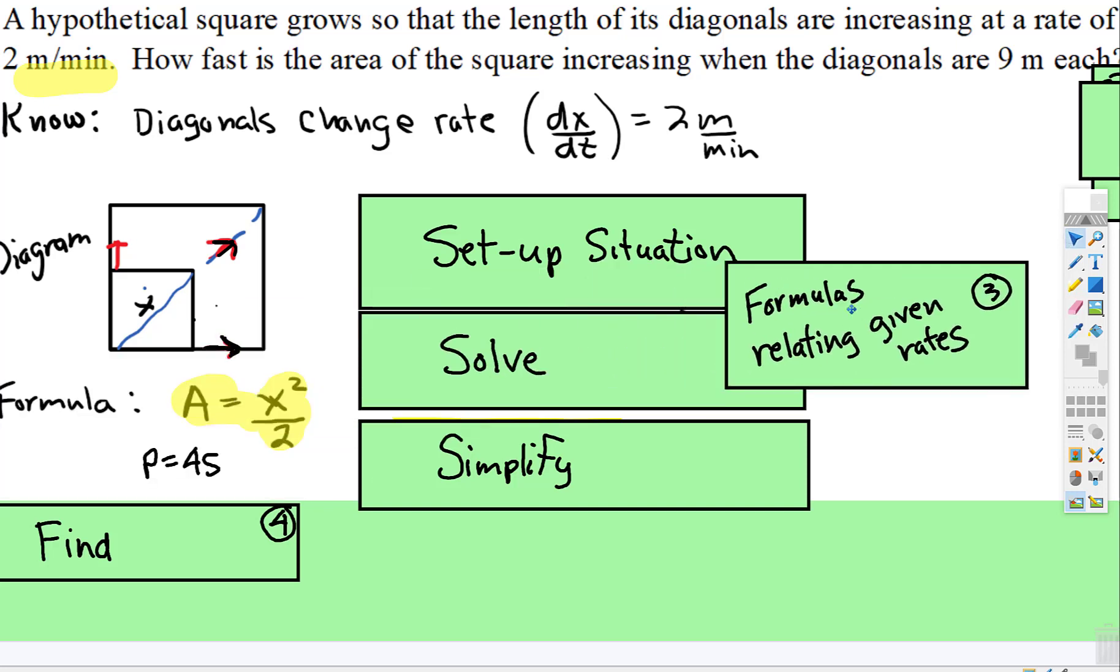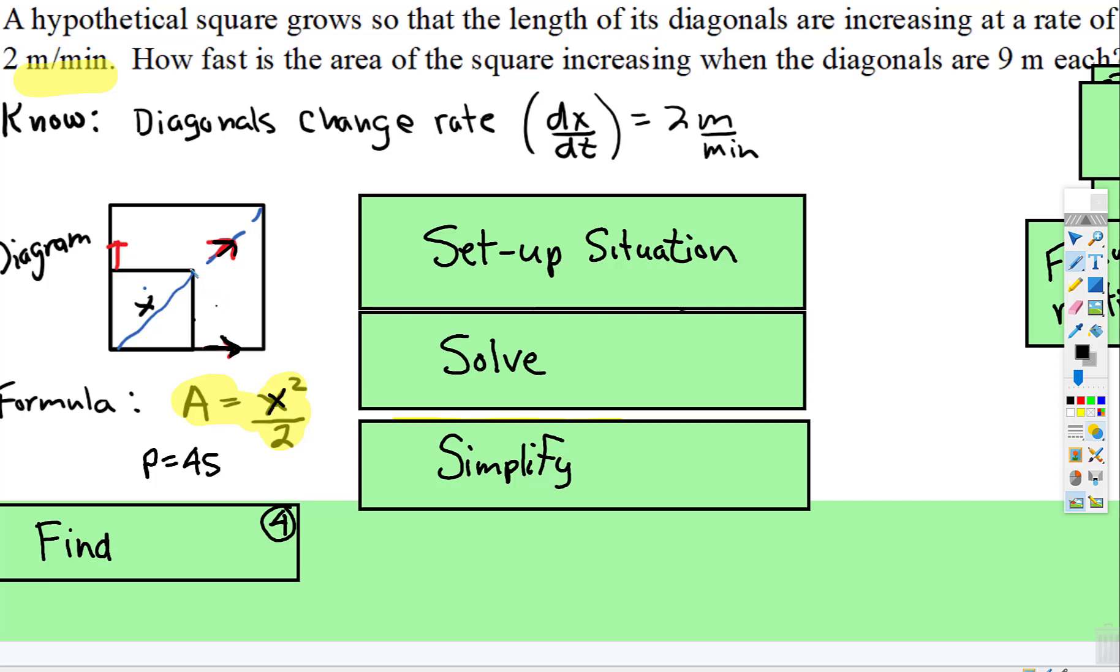And then the formulas, so I have x squared because I've named the diameter to be x, but the formula would be A is equal to the diameter squared over 2. And then a perimeter of a square is still 4 times s. And what we're asked to find is how fast the area is increasing at the exact moment that the diameter lengths are 9 meters each.